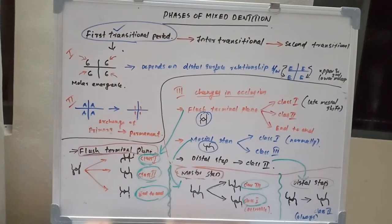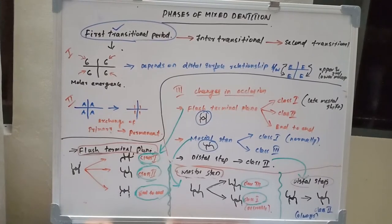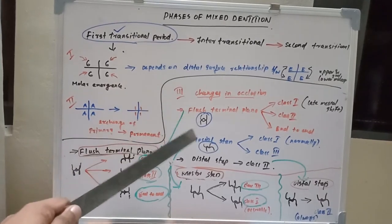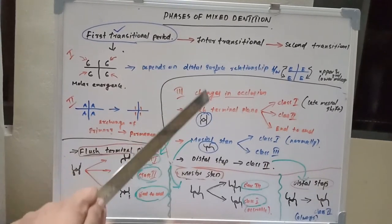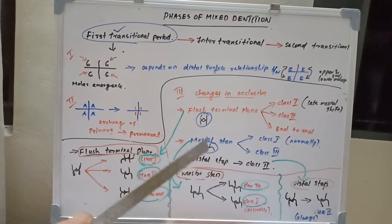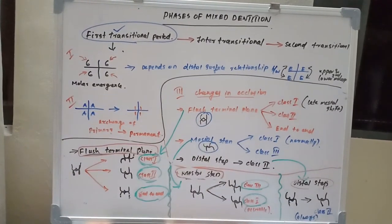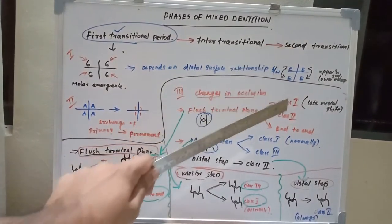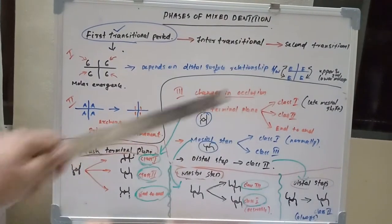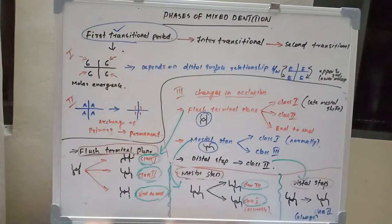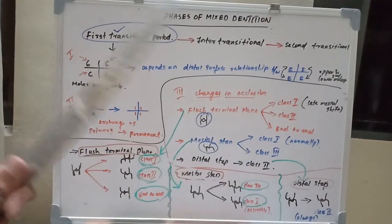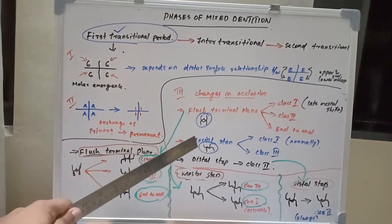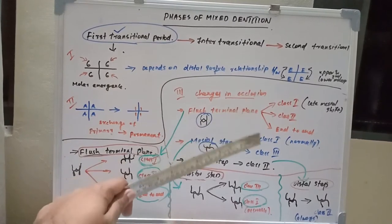Now let's look at occlusal changes during the first transitional period. The deciduous teeth occlusion is of three types: flush terminal plane, mesial step, and distal step. Flush terminal plane can give rise to Class I, Class II, or end-to-end relationship. Class I is achieved utilizing the late mesial shift, which will be discussed in the next session.